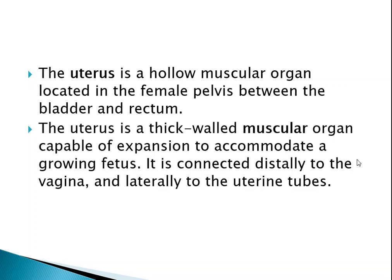The uterus is a hollow muscular organ located in the female pelvis, between the bladder and the rectum. It is a highly vascular organ with thick walls made of muscular tissue. These walls are capable of expansion — during nine months of pregnancy, the uterus expands, and that expansion is measured by the height of the fundus, the upper or top part.